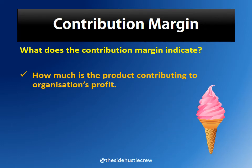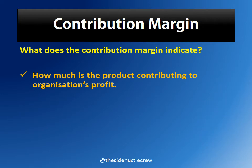For example, an ice cream parlor sells strawberry and vanilla ice cream. The contribution margin of strawberry and vanilla ice cream will show how much each flavor is contributing to the profits. A company should ideally look to double down on those products whose contribution margin is high.